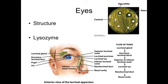A really important constituent of tears is the presence of lysozymes. Lysozymes have important anti-infective properties. As you can see on the upper right side of the screen, there is a petri dish that has had bacteria spread on it, and the disc that has tears on it has shown inhibitory activity against bacterial growth. So tears are very important, not only for keeping the eyes moist and for cleaning out physical irritants in the eye, but they also have these anti-infective properties.